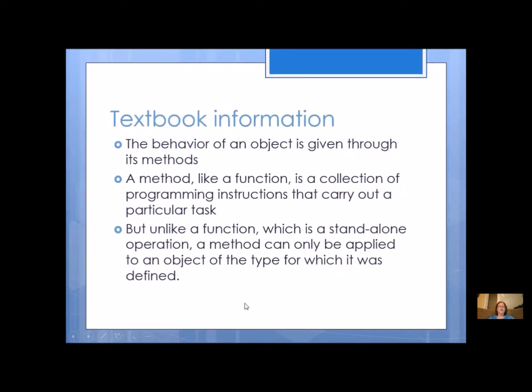This is some information from your textbook. The behavior of an object is given through its methods. A method, like a function, is a collection of programming instructions that carry out a particular task. But unlike a function, which is a standalone operation, a method can only be applied to an object of the type for which it was defined. So a method is very specific for each type of object because it defines or explains its behaviors.